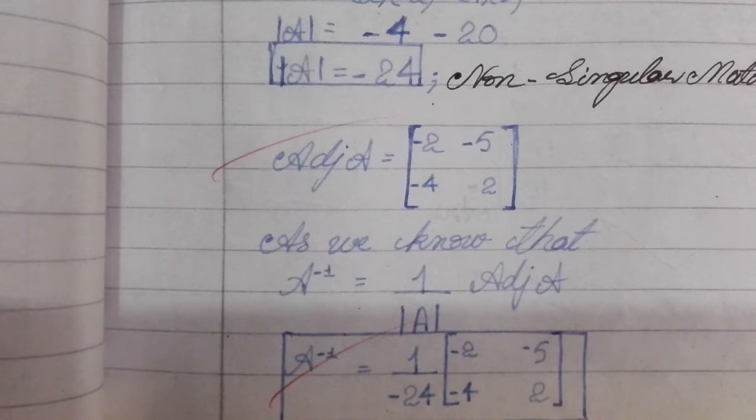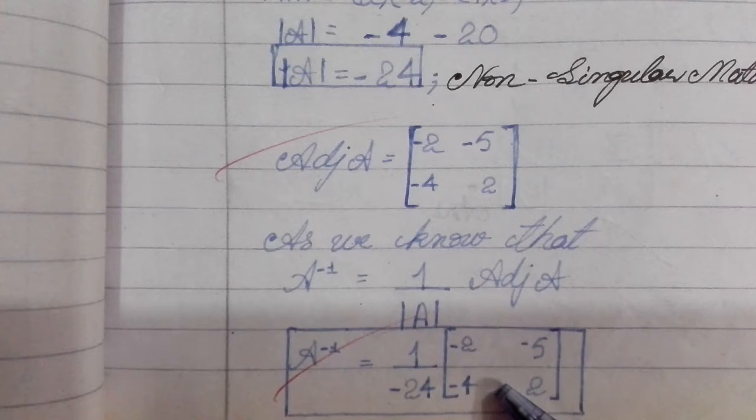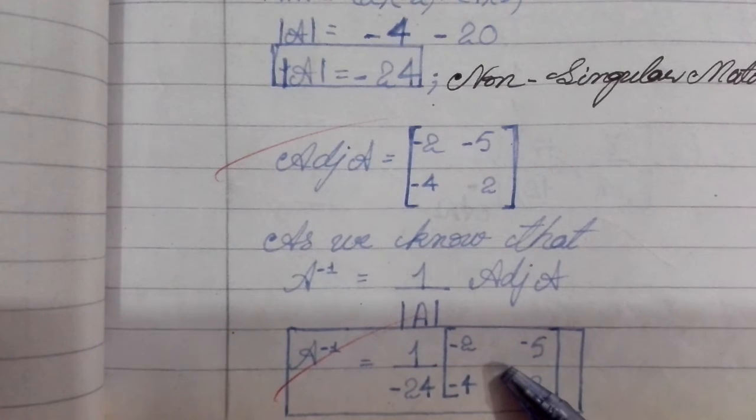These are the adjoint A elements. Now we have the A inverse value.